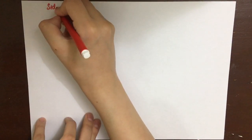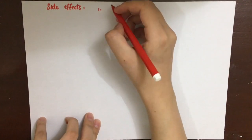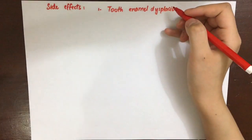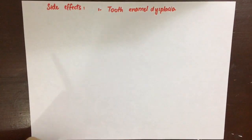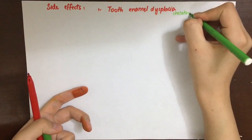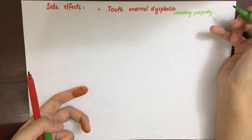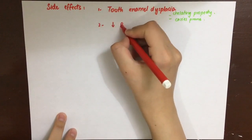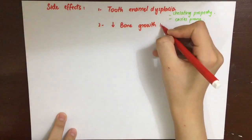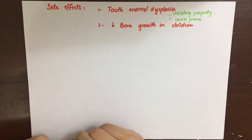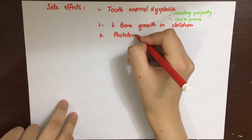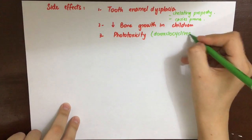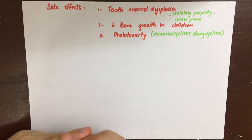Side effects of tetracyclines include tooth enamel dysplasia due to the calcium chelating property. The tetracycline-calcium orthophosphate complex deposits in growing bone and teeth, making these teeth prone to caries. After deposition, teeth show permanent brownish discoloration that is fluorescent under UV light. There is also decreased bone growth in children for the same reasons. Tetracyclines are associated with phototoxicity — especially demeclocycline and doxycycline — manifesting as sunburn-like rashes and nail pigmentation.